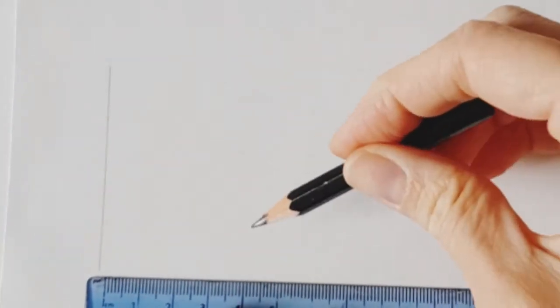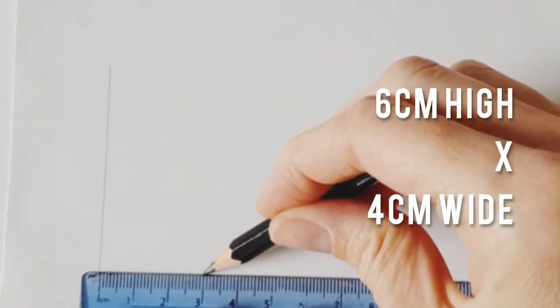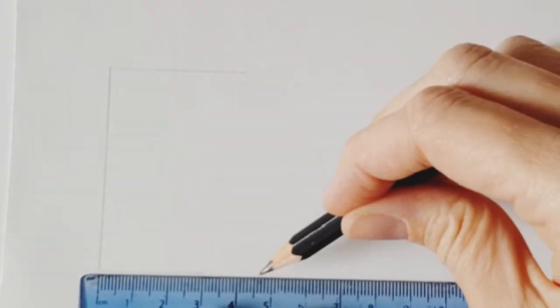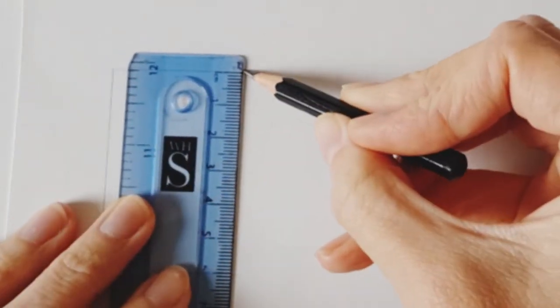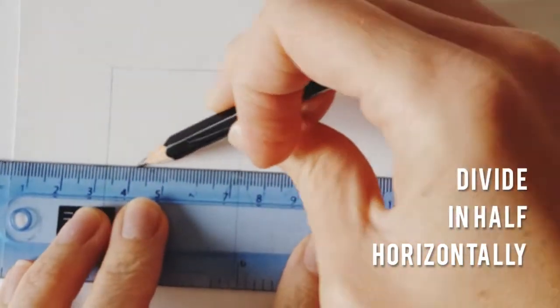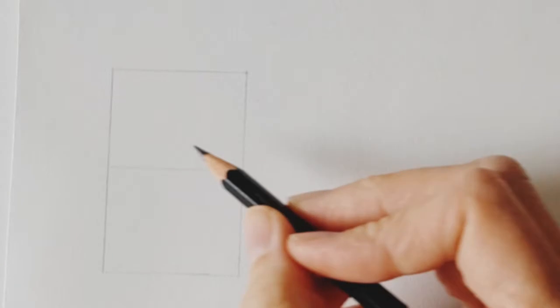I'm starting off here with a nice sharp pencil just to make sure I get that really fine line. I'm going to draw a rectangle just to give a bit of structure to start with - six centimeters by four centimeters, nice and lightly so I can rub it out afterwards.